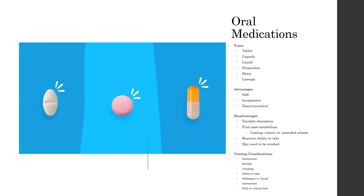Oral medications are tablets, capsules, liquids, suspensions, elixirs, or lozenges that are taken through the mouth. As you can see in the picture, these are examples of some different ones. We have tablets in the first two pictures, as well as a capsule in the third picture.